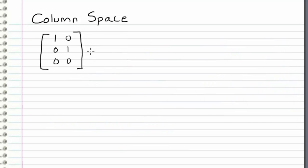So let's consider this matrix for an example. So the column space of this matrix, which we will call A, is equal to the span of the vectors that create the columns of this matrix. So [1, 0, 0] and [0, 1, 0].